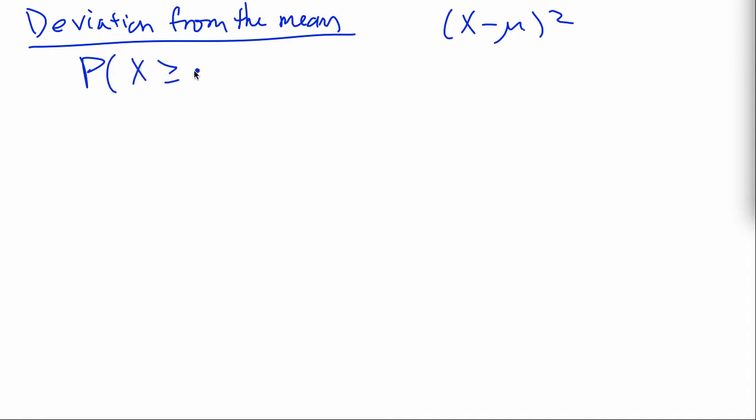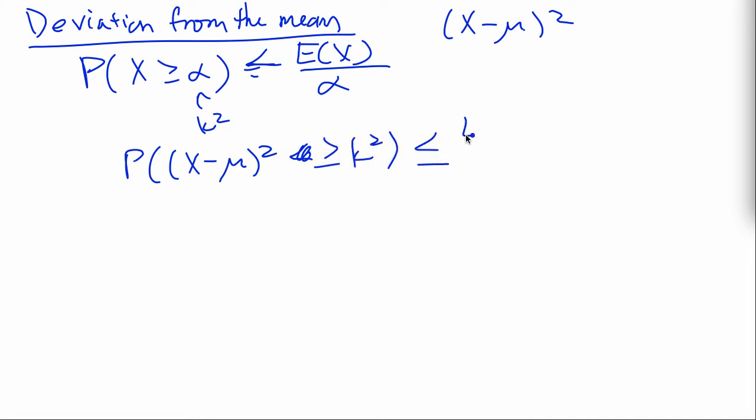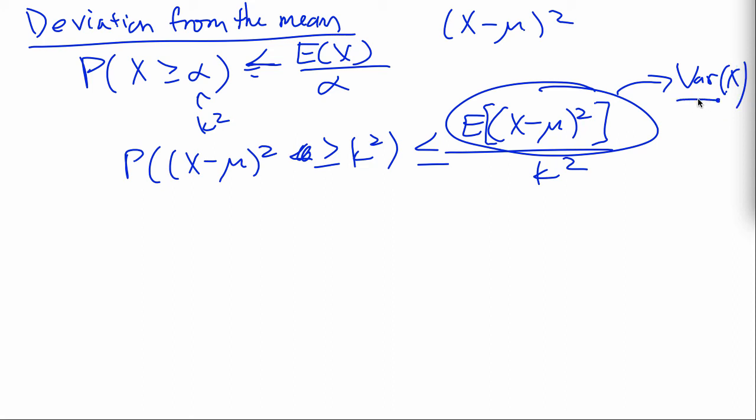So, remember Markov's inequality, where we have this formula here. Now, let's rename this to a different constant, k squared. Probability that x minus mu squared is greater than or equal to k squared. Is less than or equal to the expectation of this deviation from the mean over k squared. And you notice that this term is actually just a variance of x. Amazing.